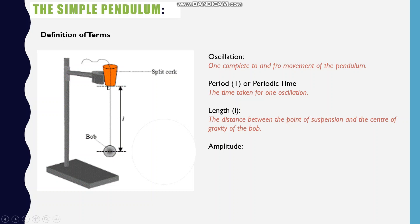The length of the pendulum is the distance between the point of suspension and the center of gravity of the bob. The amplitude is the angle between the rest position and the extreme position of the pendulum. In a later simulation, we will look more on each of these terms.